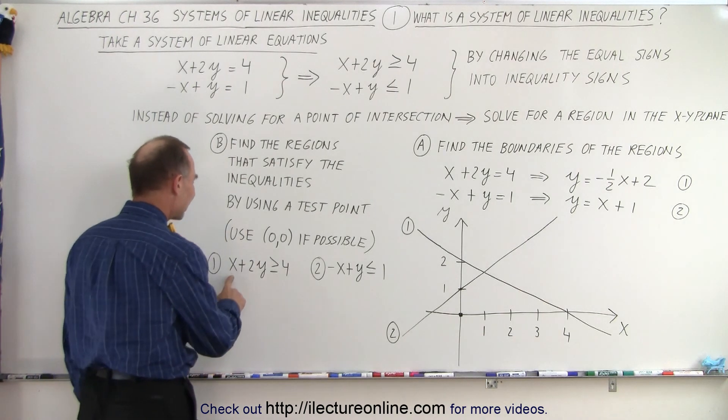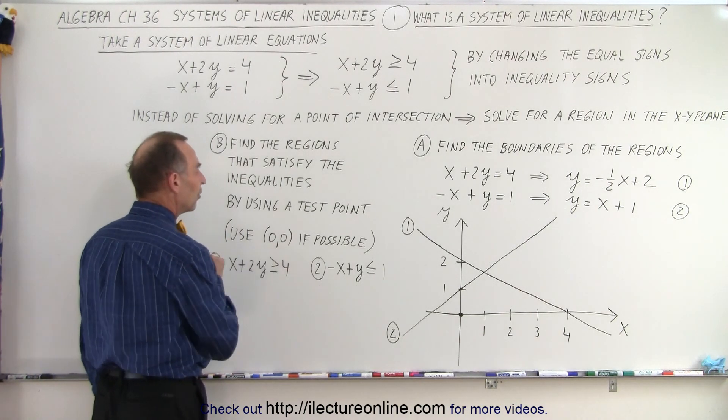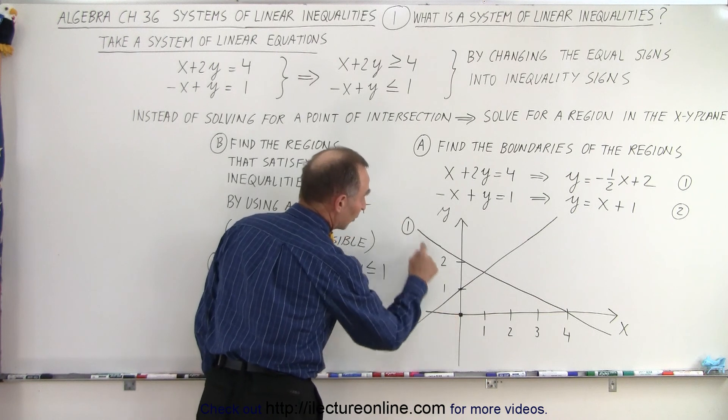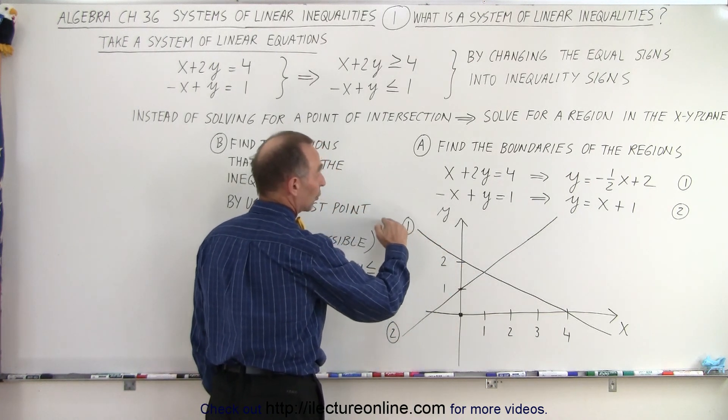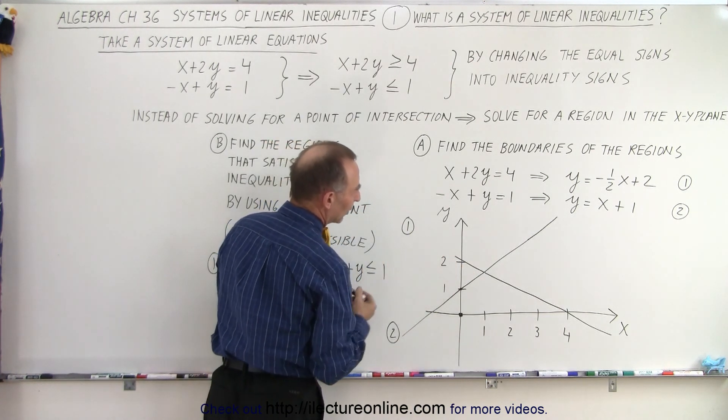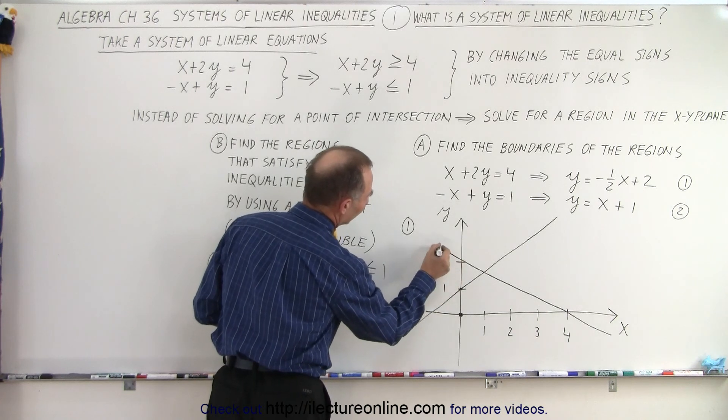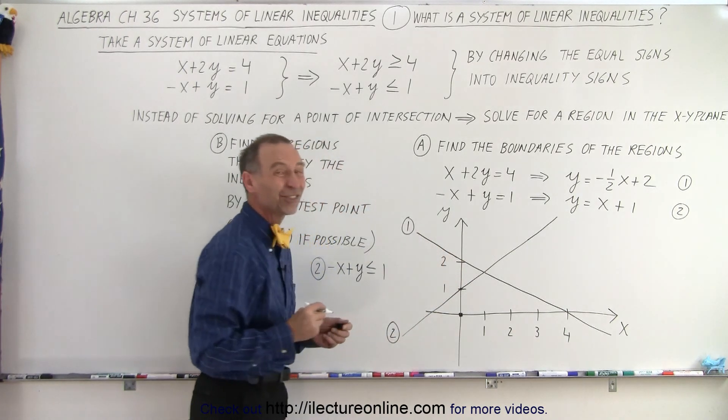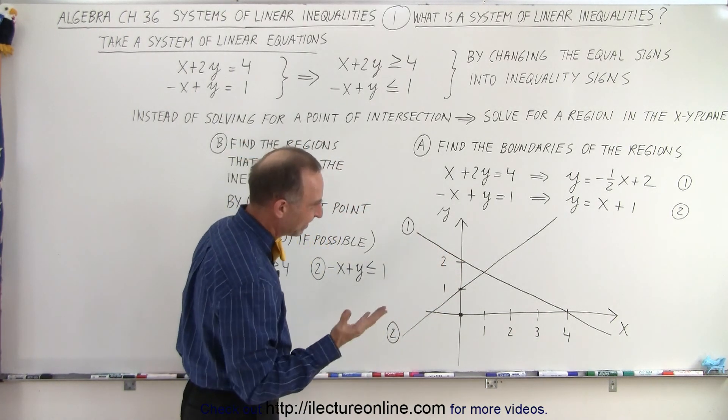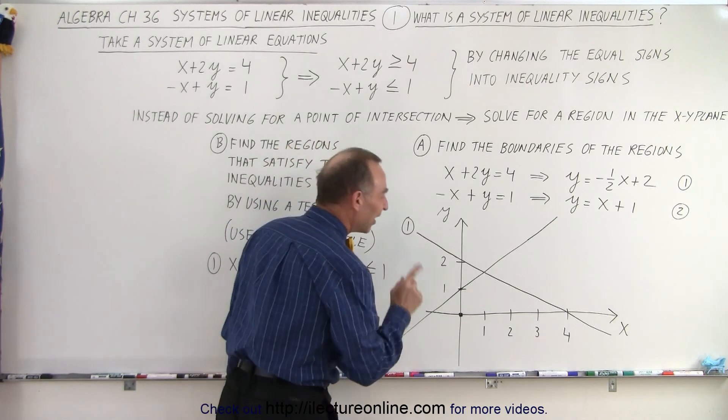So what we do is we replace x and y by 0 and 0. So what we want to do is for equation number one, notice for equation number one and line number one is beginning to bother me. It's not very straight. There we go. It's a little straighter. All right. Not much. Okay.